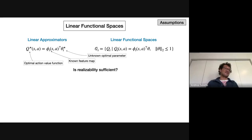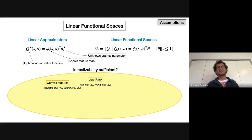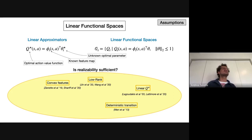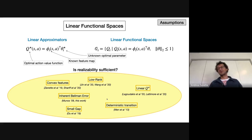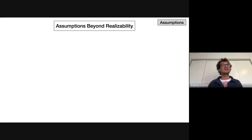Is realizability sufficient? It certainly is in machine learning. But unfortunately in reinforcement learning, people have been making many other assumptions: using convex features, the low-rank assumption, linearity of Q-values, deterministic transitions, inherent Bellman error (which is what we assume here), small gaps among Q-values, and many others. Chances are you've made some of these assumptions in your work. To really appreciate the batch assumption, we need to look at all of them briefly and explain what they mean and how they relate to each other.